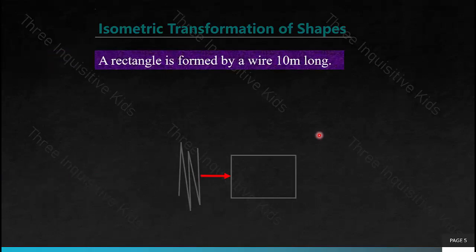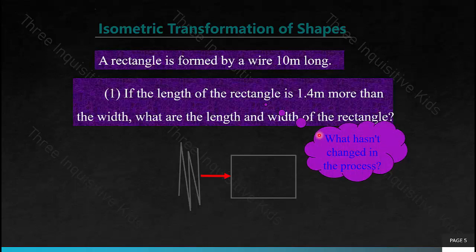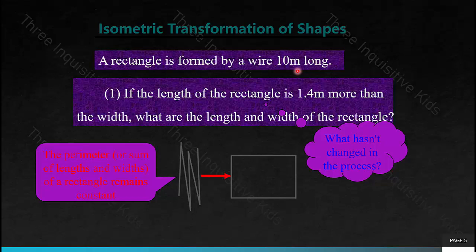A rectangle is formed by a wire that is 10 meters long. If the length of the rectangle is 1.4 meters more than the width, what is the length and width of the rectangle? What hasn't changed in the process? The wire is still 10 meters long. No matter what the length or width of this rectangle is, the perimeter still stays the same — it's still a 10-meter-long wire. The perimeter remains constant, and that's where we can begin thinking about writing down an equation.